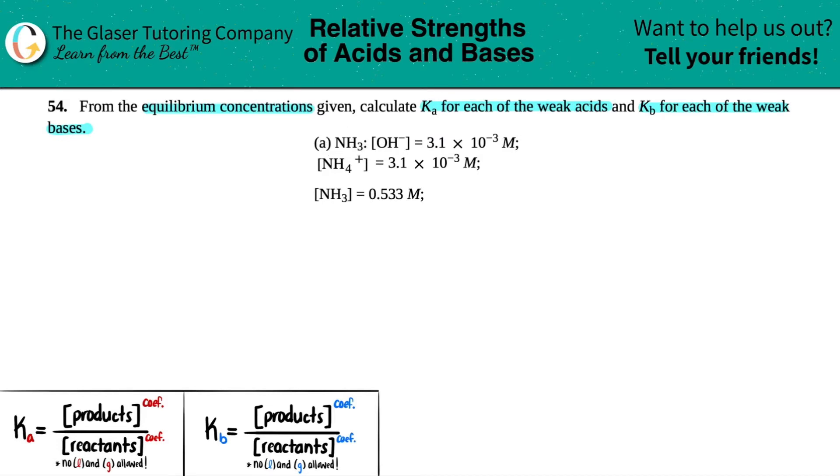They told us that in this solution we have a concentration of OH- and NH4+, both 3.1×10^-3 molarity, and our ammonia concentration is 0.533 molarity. First, we need to determine if this is a weak acid or weak base, which comes from making either hydronium or hydroxide. In this case, hydroxide was stated - we have an OH- concentration.